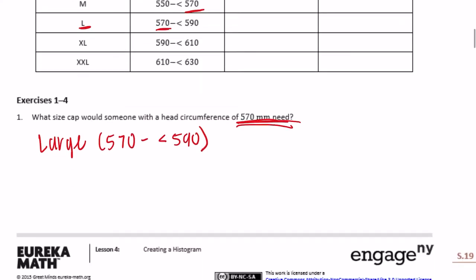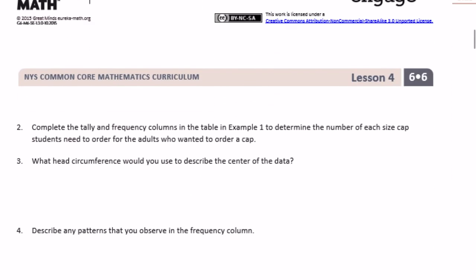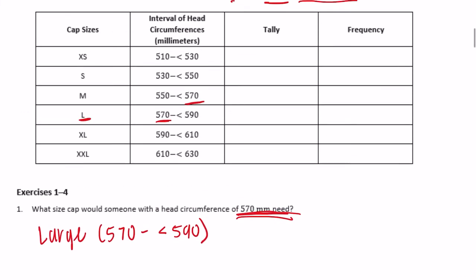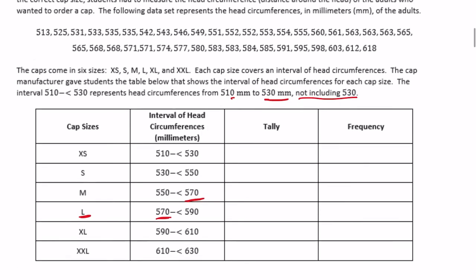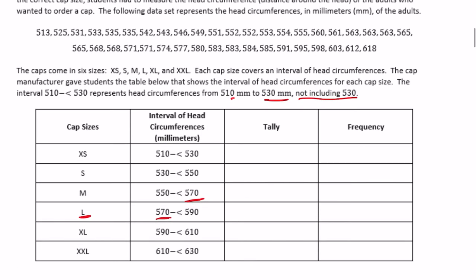Now complete the tally and frequency columns in the table from example one to determine the number of each cap size students need to order for the adults who wanted to order a cap. We're going to go through and complete this frequency table.